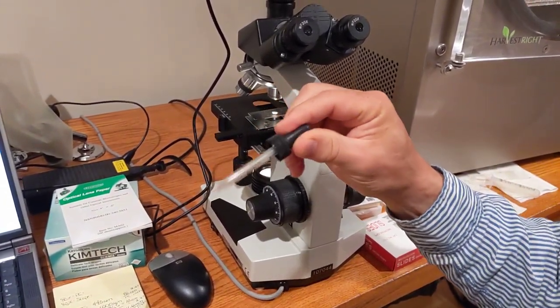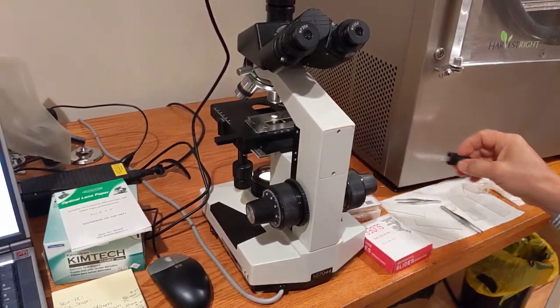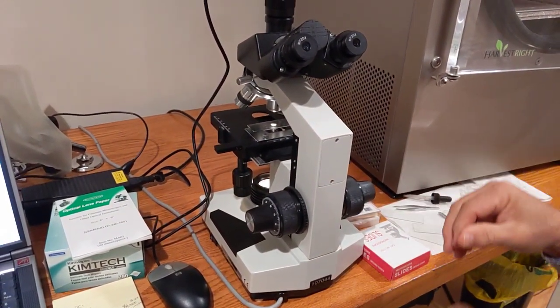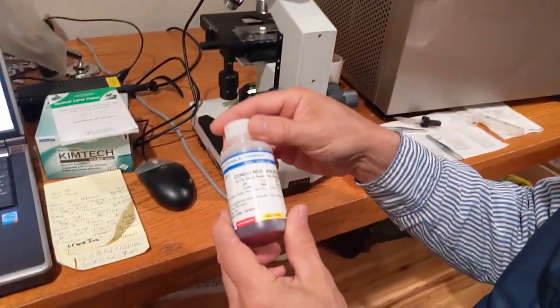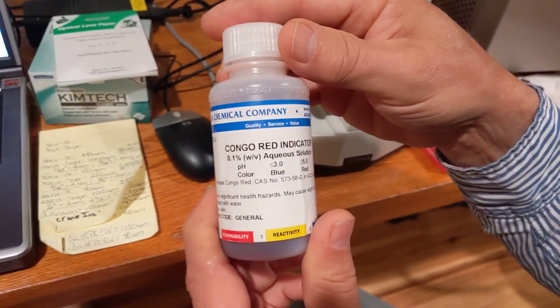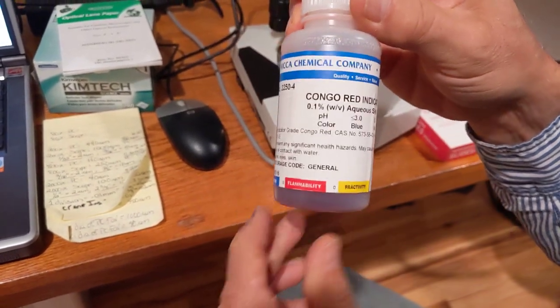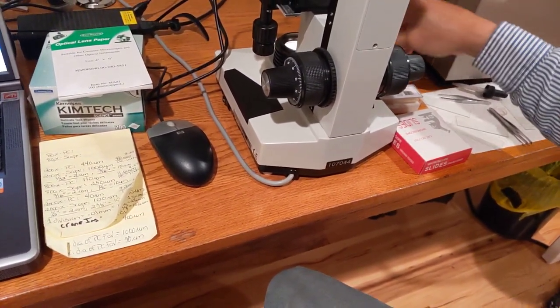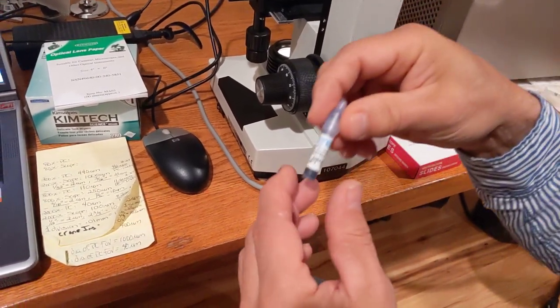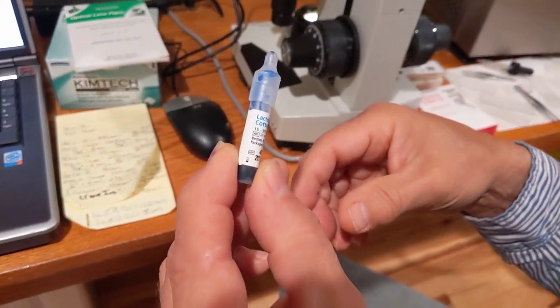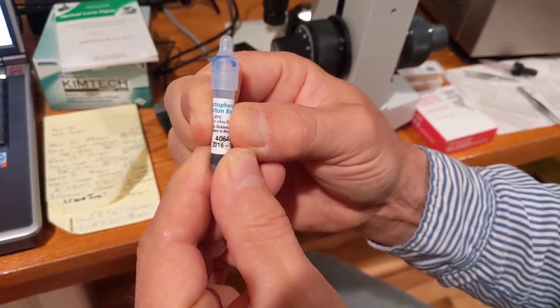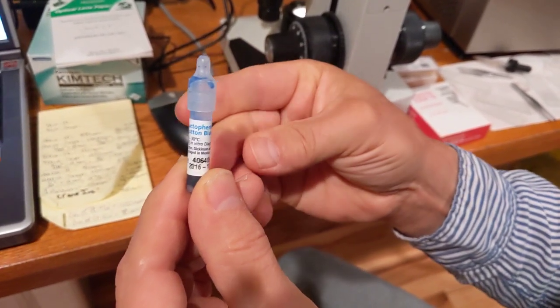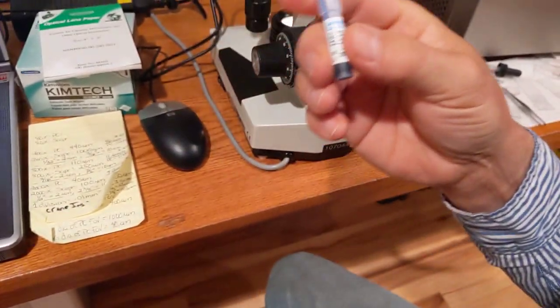You're definitely going to need yourself an eyedropper, and I've got a set of tweezers up here. Now, in addition, you may want to consider getting a couple dyes. One is this Congo red—I just bought this off of Amazon, it's relatively inexpensive. The other is this cotton phenol blue. I bought a bunch of these little vials; you actually squeeze them and crack the glass open and then you apply it.